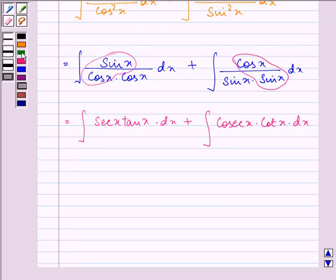Now the integral of secant x tan x dx is equal to secant x plus integral of cosecant x cotangent x dx. Here we will have minus cosecant x plus c.